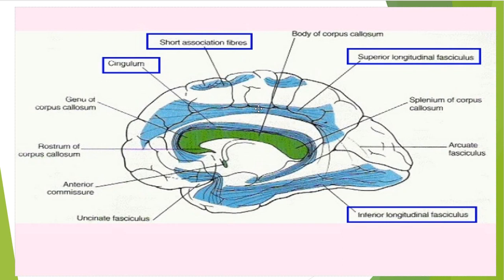The superior longitudinal fasciculus associates the frontal lobe with the parietal and occipital lobes. The inferior longitudinal fasciculus associates the temporal and occipital lobes. The cingulum is a bundle of fibers confined to the cingulate gyrus; it associates the frontal, parietal, and temporal lobes.